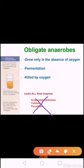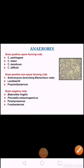If we grow obligate anaerobic bacteria in a medium, they will grow at the bottom of the tube where there is no oxygen. The habitat of these anaerobes can be endogenous — for example, normal human flora of the intestine, mouth, and genitourinary tract — or exogenous from the environment, for example soil.